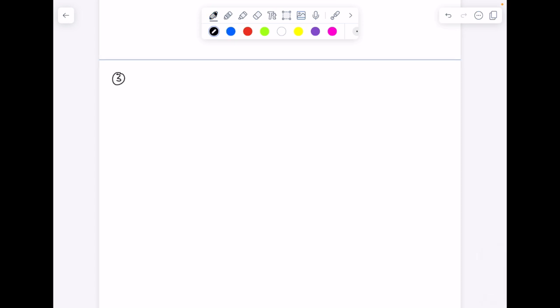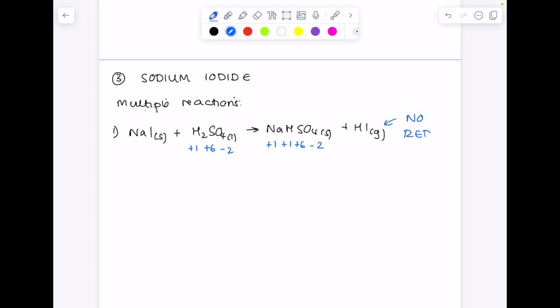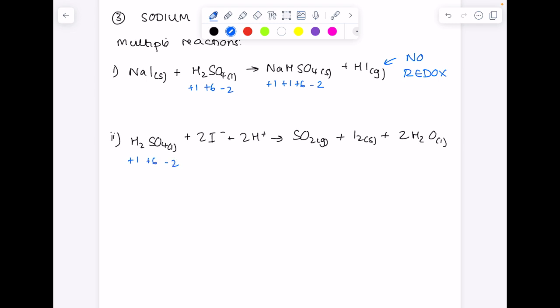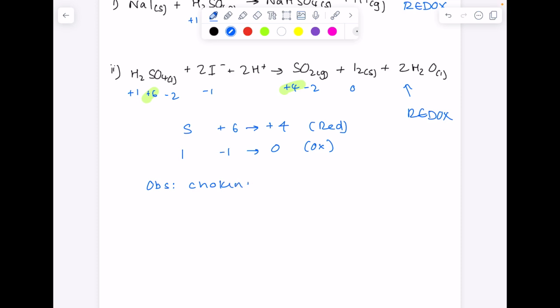Now we're considering the iodide halide ion in the form of sodium iodide. Well, we have multiple reactions taking place here. So that sulfur hasn't changed oxidation state. There's no redox reaction in this first reaction. Reaction two now. So there's reduction taking place because we've gone from plus six on sulfur to plus four. Looking at iodine, we've gone from minus one to zero. So that's oxidation. So this is a redox reaction. Our observation here is a choking gas, which is sulfur dioxide.